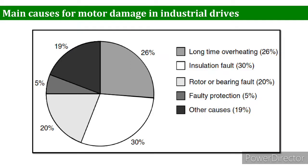Faulty protection — such as a wrong relay installed, a relay not working, or a faulty CT/PT — has a share of 5 percent. Other causes, including stator problems and winding problems, have a total share of 19 percent. This ABB Group statistics provides a clear idea of how important protection is and which areas to focus on.